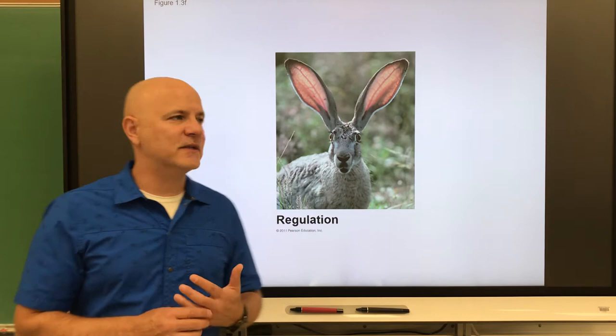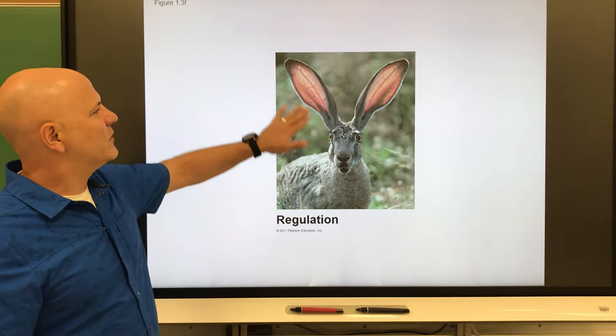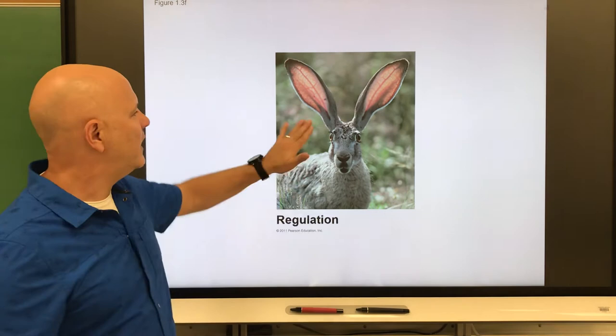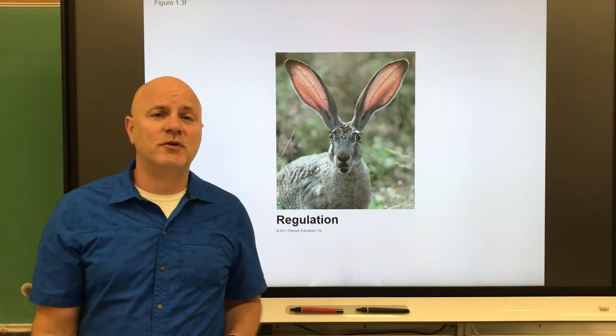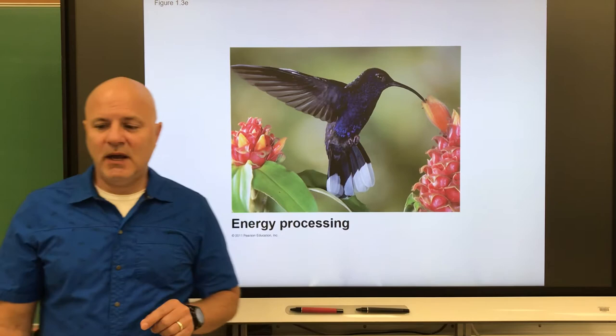This is a jackrabbit — they're pretty large bunnies. They've evolved for hotter, drier environments and have really large ears with visible blood vessels. When they get hot, they push blood out to those ears to help lose heat to the environment. Similarly, when we get hot, our skin gets flushed as we push blood to our skin surface to lose heat.